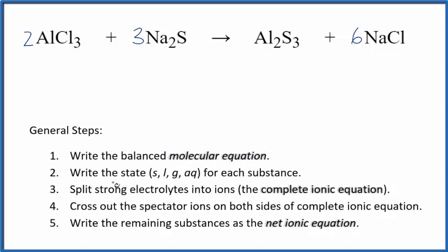For net ionic equations, the next step is to write the state for each substance. And that looks like this. So chlorides, normally soluble. Compounds with sodium, they're also soluble, but in general sulfides are insoluble. And this Al2S3 aluminum sulfide is insoluble. That means this is going to be our precipitate. This is going to fall to the bottom of our test tube as a precipitate, as a solid. So we have our states.